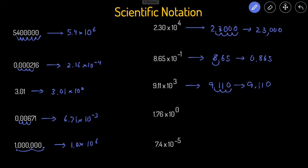The next one has a situation where the exponent is 10 to the zero. Whenever the exponent is zero, this is just one, so this would just be 1.76 times one, which is just going to be 1.76.